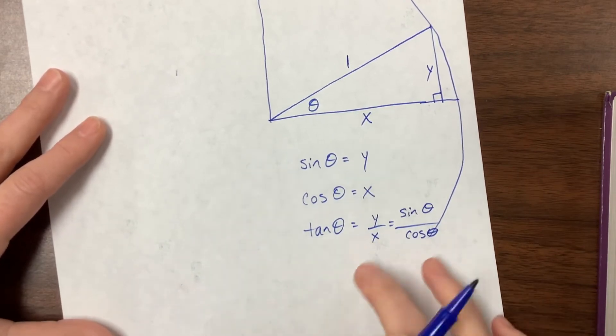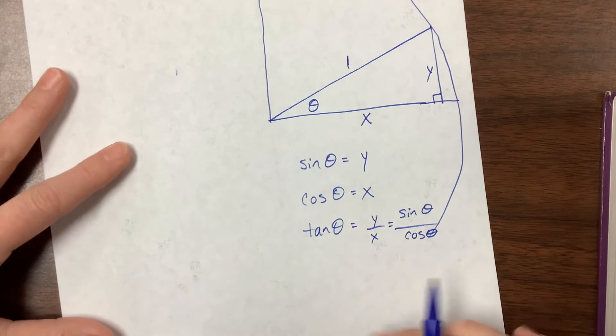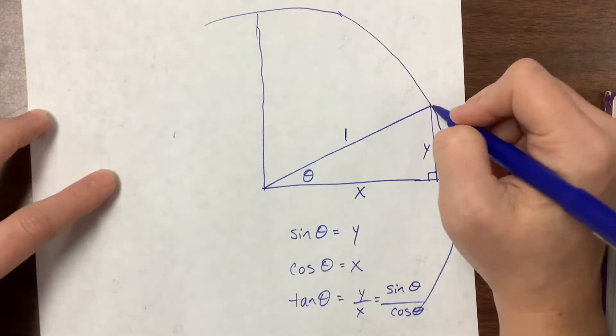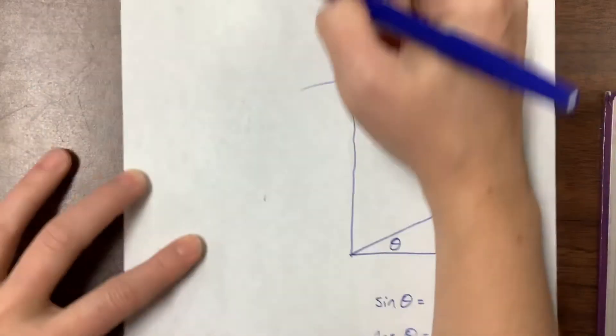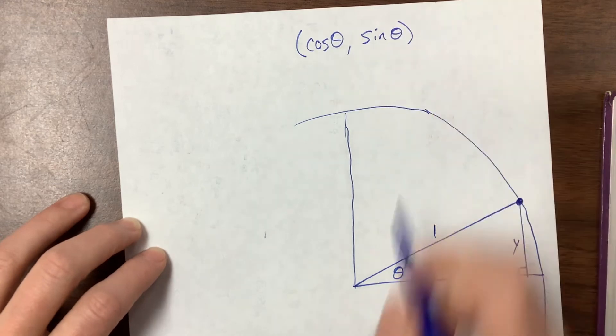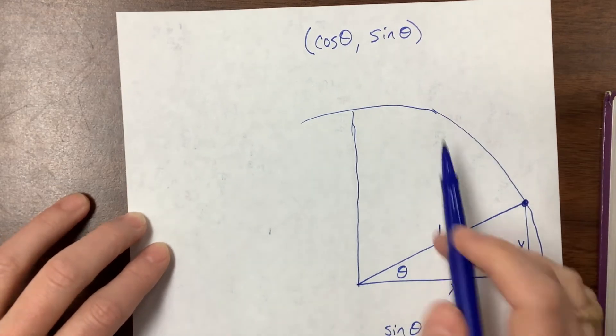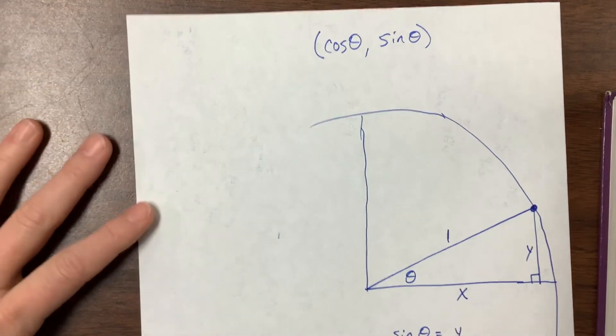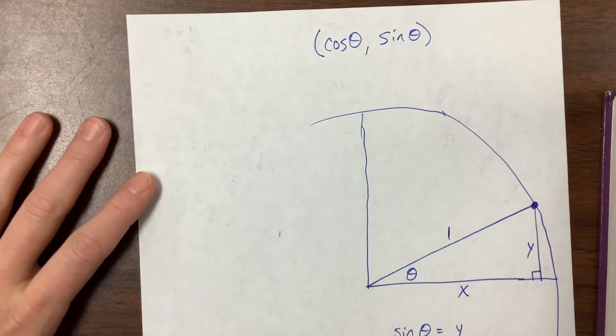When we get into trig identities, this is going to be hugely important. Basically, every ordered pair—the x value is cosine of theta and the y value is sine of theta. If I have the unit circle memorized, I know sine, cosine, and tangent for 16 individual values on the unit circle.